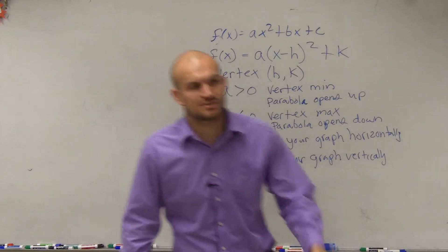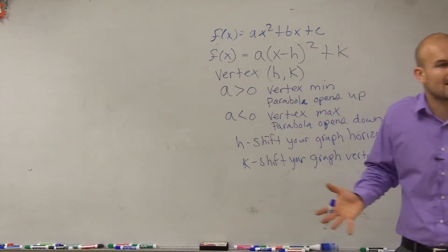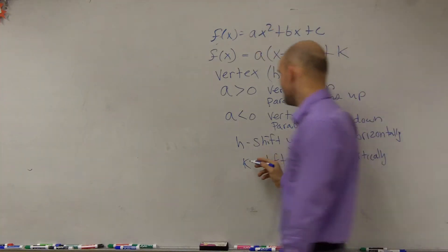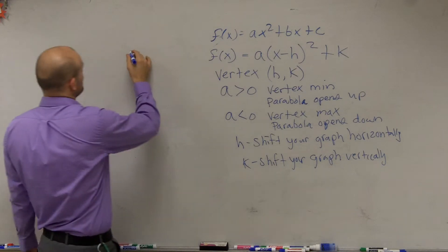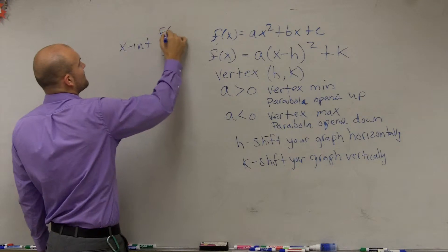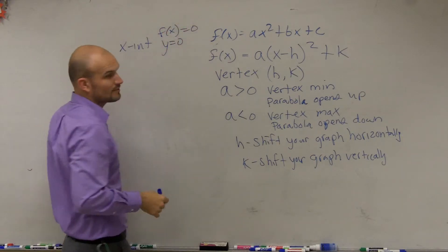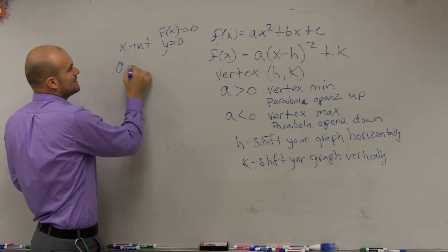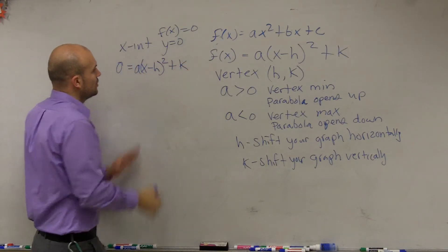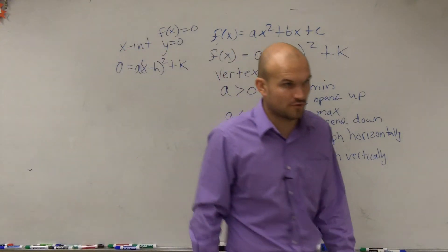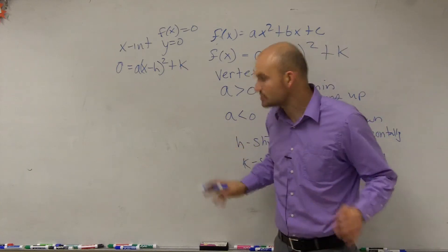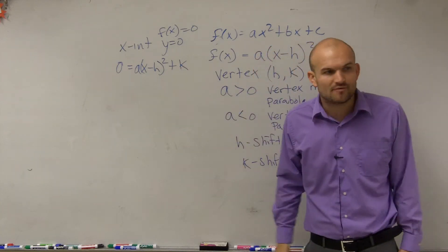Now, the last thing I want to go over is what about the x and y intercepts? Is that the same as finding the x and y intercepts for this? Yeah, it is. If you want to find the x intercept, the x intercept is when y equals 0 or f(x) equals 0. Now, here's why I like doing it in vertex form. 0 equals a times x minus h squared plus k. The only variable that I actually have to solve for is x. I'm going to have constants for a, h, and k.